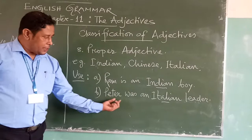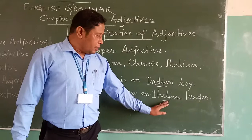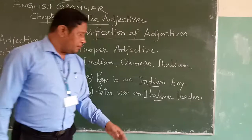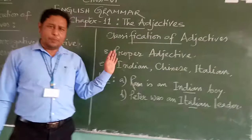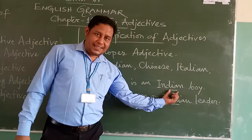Since it qualifies the noun, it is an adjective. It is called a proper adjective because it comes from a proper noun. In the second example: Peter was an Italian leader — here 'Italian' qualifies the noun 'leader' in this sentence, so it is a proper adjective. It comes from the proper noun 'Italy'. However, this type is not given in many books.